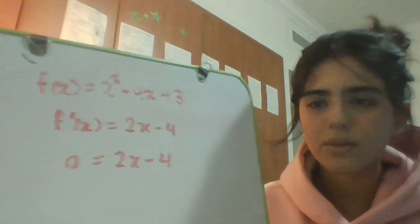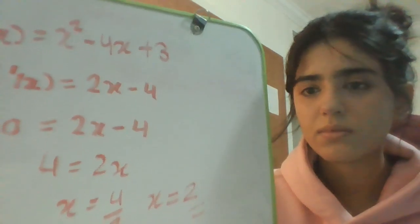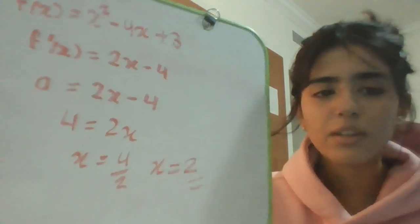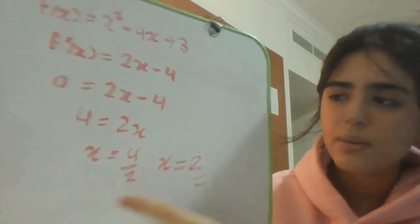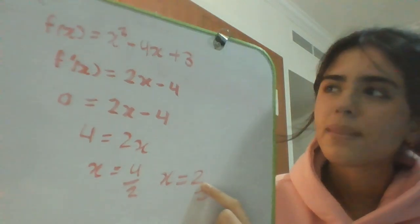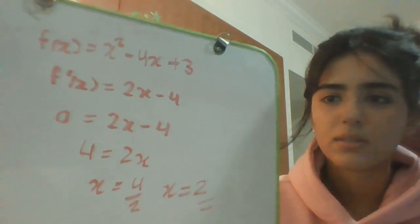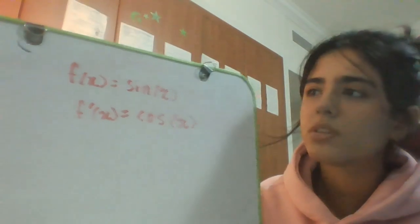Here we have the critical number which is x = 2. Two is going to be our critical number. This was a pretty easy example, so I'll do one or two more harder examples.